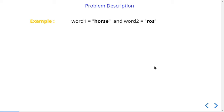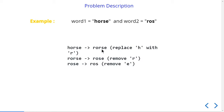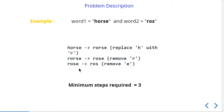Let us understand this problem with an example. We are given word1 as 'horse' and word2 as 'ros', so we have to convert horse to ros. First, we replace h with r. Second, we remove the extra r. Third, we remove the extra e. So we need a minimum of three operations to convert horse to ros.